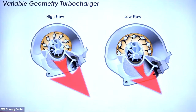We'd be remiss if we didn't bring up variable geometry turbochargers, which are on the rise and being used in a lot of vehicles now. The variable geometry turbo, or VGT, is an electronically controlled turbo by the vehicle's PCM and it's hydraulically actuated using pressurized lube oil. It may also be referred to as an electronic variable response turbocharger. The VGT uses a similar turbine and compressor wheel setup, but the turbine housing also contains vanes that control the effective internal size of the housing. These vanes are hydraulically actuated and electronically controlled.